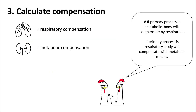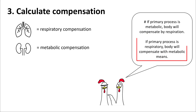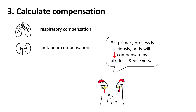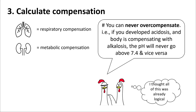Next step: calculate compensation. There are two ways — respiratory and metabolic. If the primary process is metabolic, the body compensates by respiratory means. If the primary process is respiratory, the body compensates with metabolic means. If the primary process is acidosis, the body compensates with alkalosis, and vice versa. Importantly, you can never overcompensate. If you developed acidosis and your body is compensating with alkalosis, the pH will never go above 7.4. And if you developed alkalosis, the pH will never fall below 7.4.